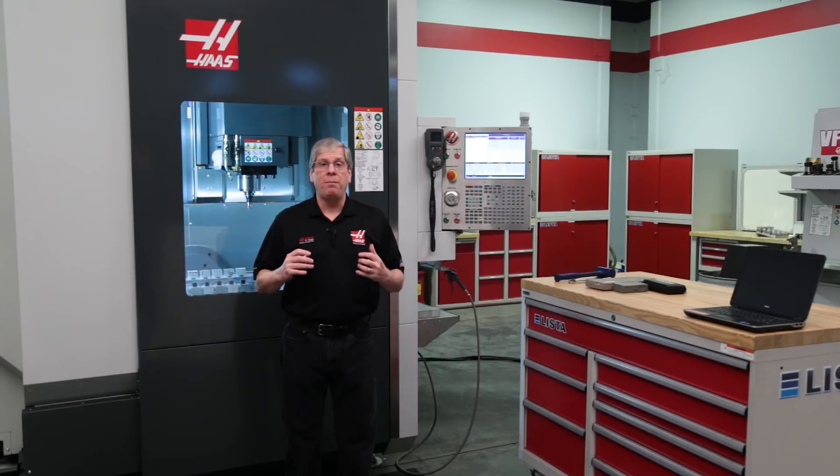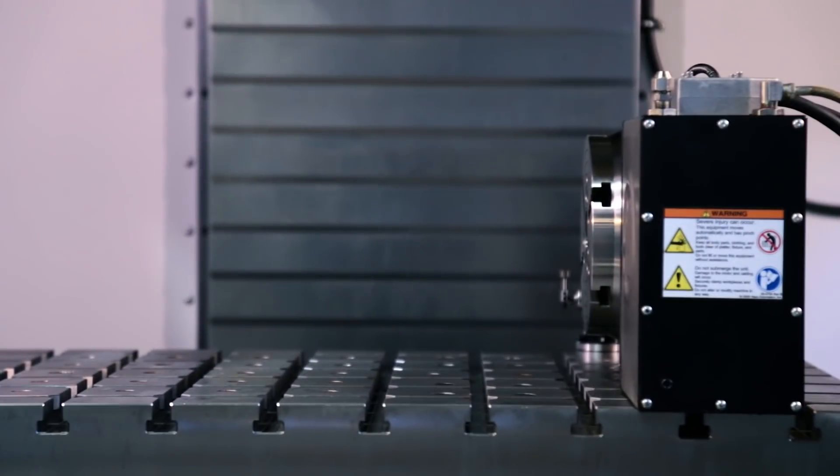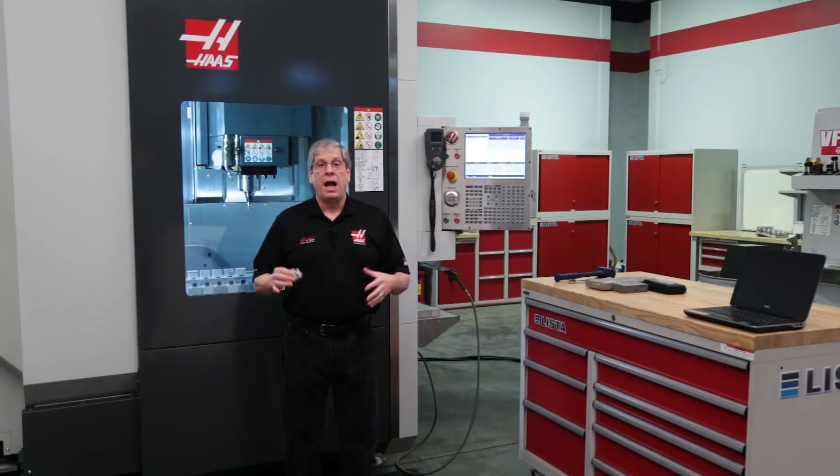The beauty of this is that next time I need to run these parts, I can take this whole setup and put it in a VF2 with an HRT210, or for that matter, any other Haas mill large enough to hold it. I don't have to change my program or anything.